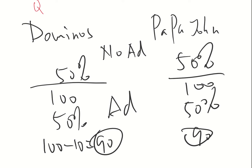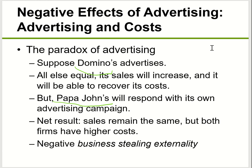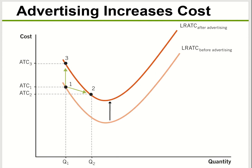Next chapter we'll study oligopoly and the prisoner's dilemma for more details on this. For now, know that the downside effect is that if everybody advertises, it results in lower profit for everybody. Also, looking at the long-run average total cost curve — when you advertise, you have higher costs, and higher costs are inefficient.